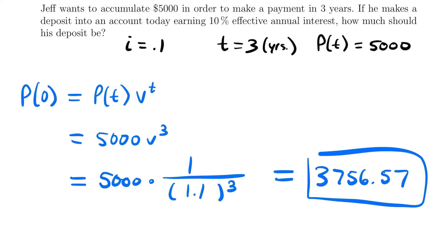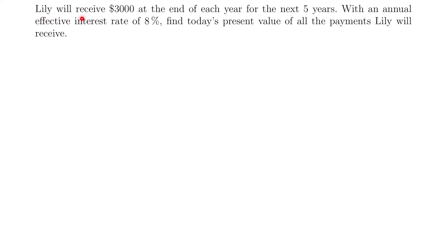Let's look at another example. Lily will receive $3,000 at the end of each year for the next five years with an annual effective interest rate of 8%. Find today's present value of all the payments Lily will receive. This problem tells us directly we're looking for the present value. We are looking at multiple payments of the same value — $3,000 being paid to Lily at the end of each year for five years.